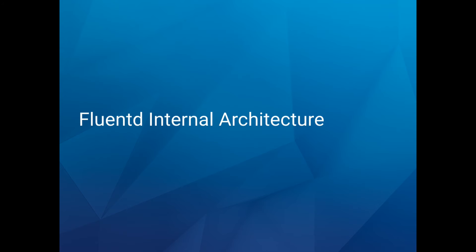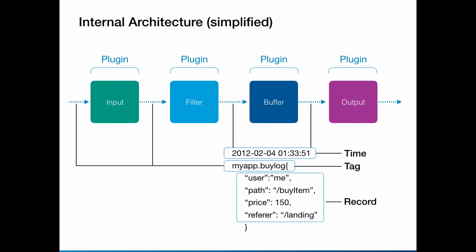We covered the basic use cases of Fluentd. Now let's go into the internal architecture. There are four types of plugins: input plugin, filter plugin, buffer plugin, and output plugin. What Fluentd deals with is a JSON data body called a record, plus the tag on the data so you can identify the data source, and the timestamp. By using these combinations, you can process or route the data.